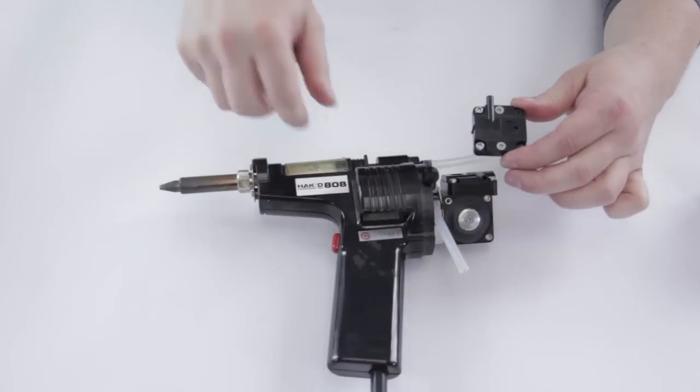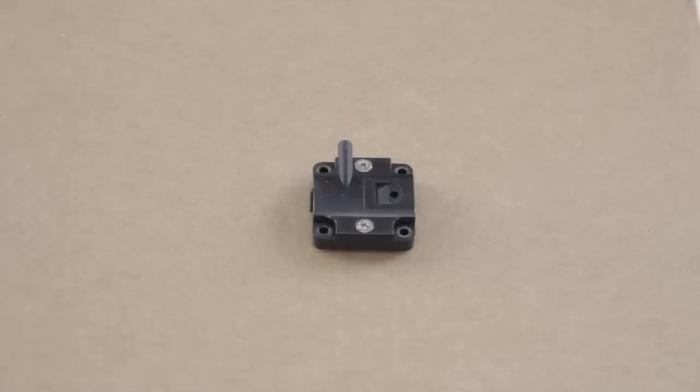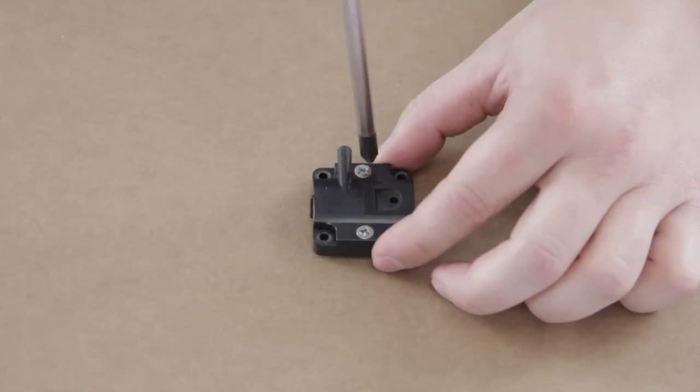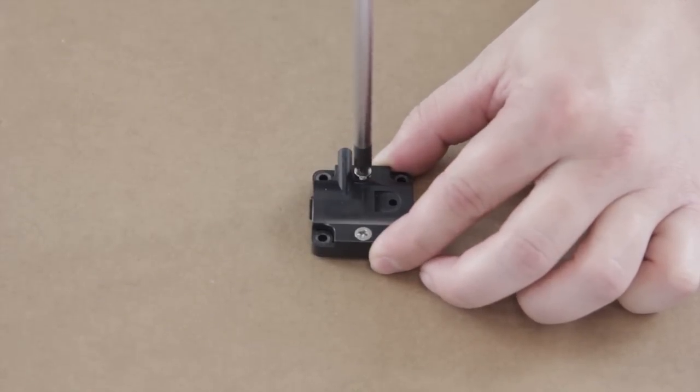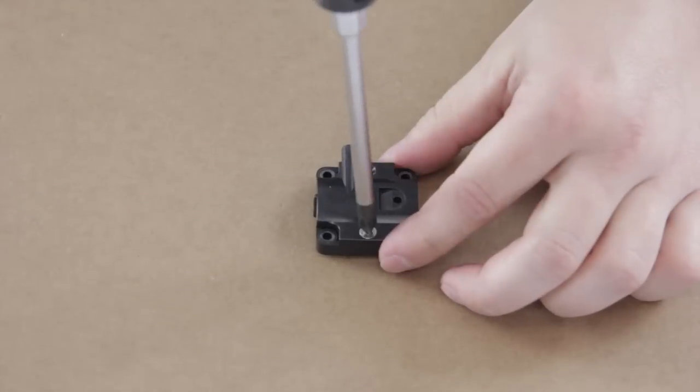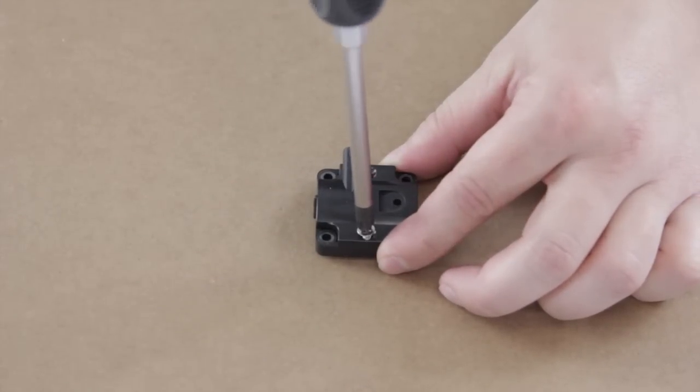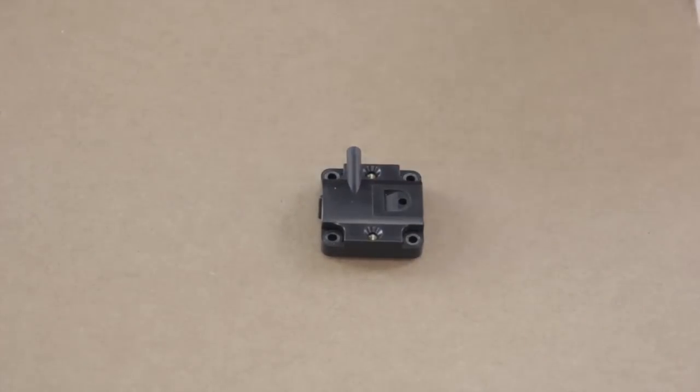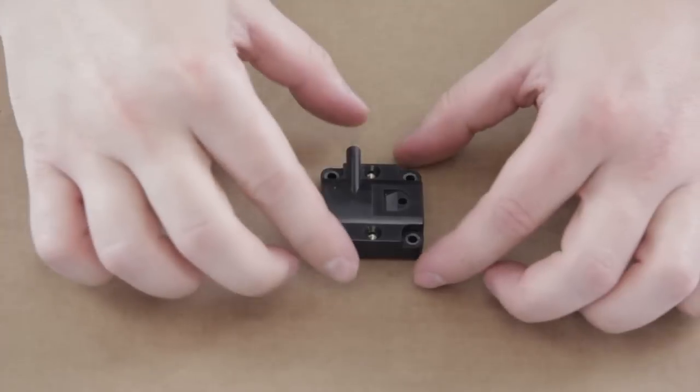Then you can go ahead and lift off the assembly. Now we've got the valve housing free, we can undo the two screws on top and separate the two halves of the housing.